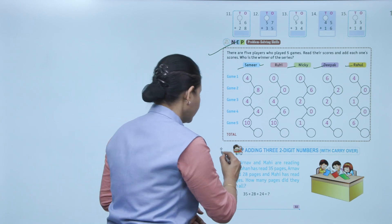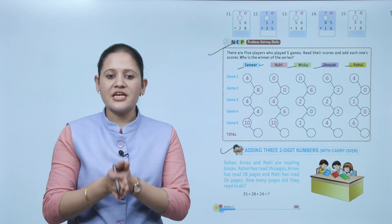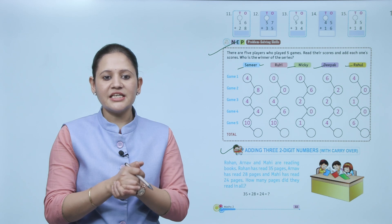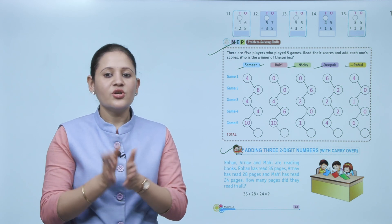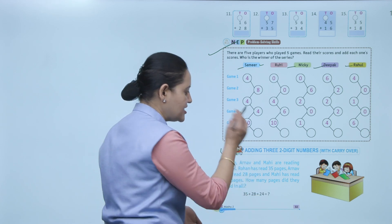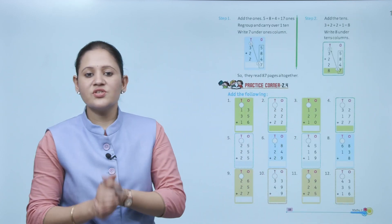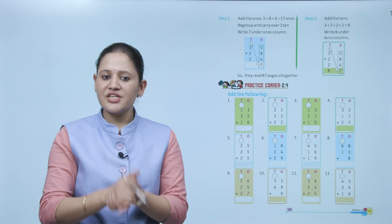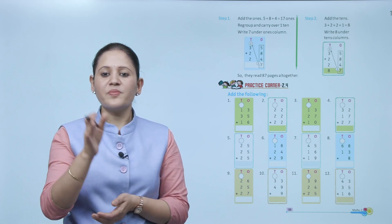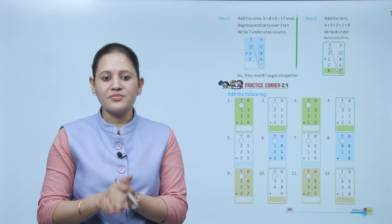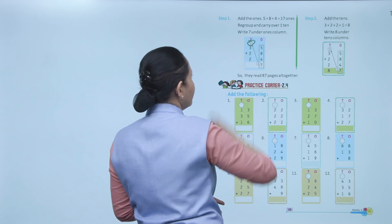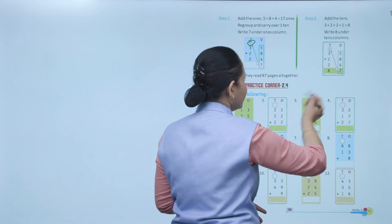Adding three two-digit numbers with carryover: Rohan has read 35 pages, Arnav has read 28 pages, and Mahi has read 24 pages. How many pages did they read in all? Add 35 plus 28 plus 24. Step 1: add the ones — 5 plus 8 plus 4 is 17, write 7 and carry 1 ten. Step 2: add the tens — 3 plus 2 plus 2 plus 1 is 8. Total: 87 pages.